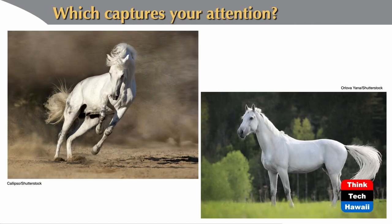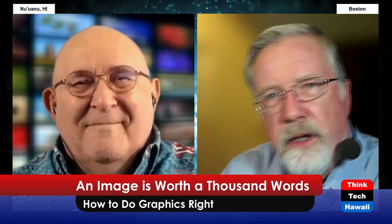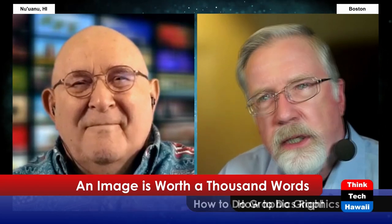Which one is moving? Which one is more interesting to look at, and which one keeps your attention? Which one feels scarier? The one on the left — we're looking down at a toy dinosaur. The one on the right — the toy dinosaur is about to have us for lunch. It's simply being aware of the power of images and thinking about what it is that you want to convey.